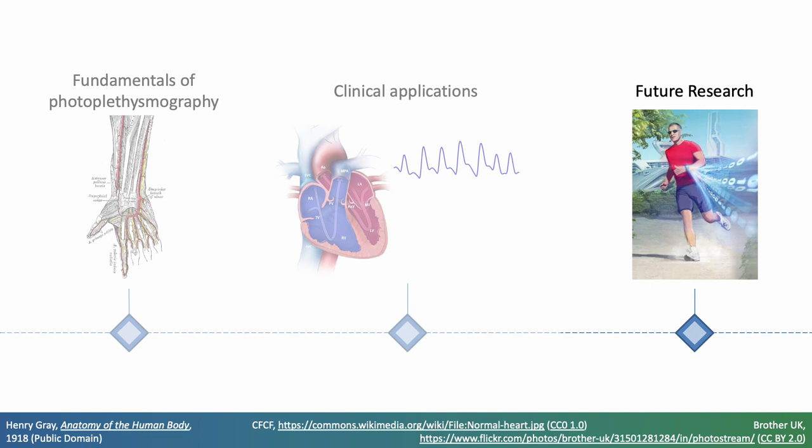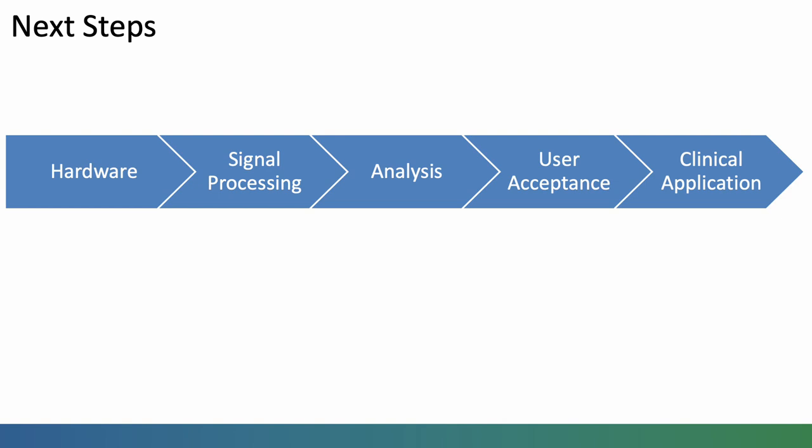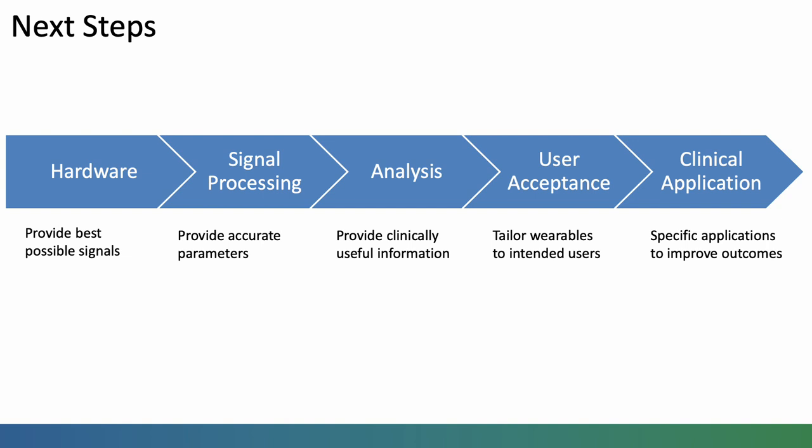Finally, some potential areas for future research. I'd split future research into five categories. Firstly, optimizing the hardware to provide the best possible PPG signals. Secondly, optimizing signal processing algorithms to ensure that the parameters are as accurate as possible. Thirdly, developing analysis techniques to ensure that we provide clinically useful information from this mass of data that can be collected from wearables. Fourthly, working on user acceptance, tailoring wearables towards the intended users to make them as acceptable as possible. And finally, identifying specific clinical applications where wearables could plausibly be used to improve health outcomes.